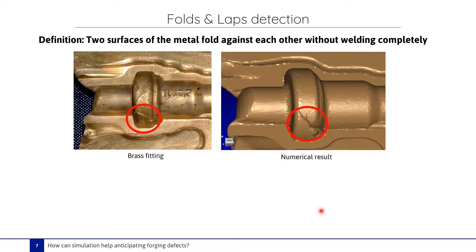Let's go to another defect: folds and lapse. Folds or lapse are defects that appear when two surfaces of the metal fold against each other without welding completely. Here, a case of a breast fitting is presented, and we see how the simulation can predict this defect. By analyzing the metal flow, we can detect this defect. Results are in very good agreement with reality.